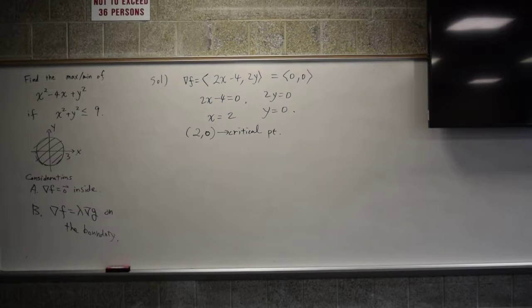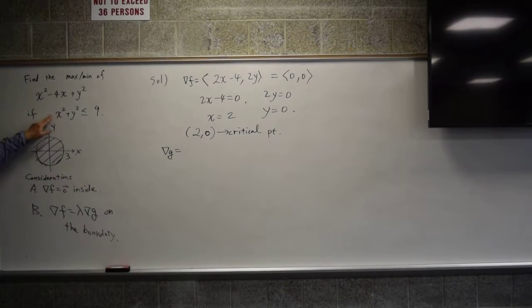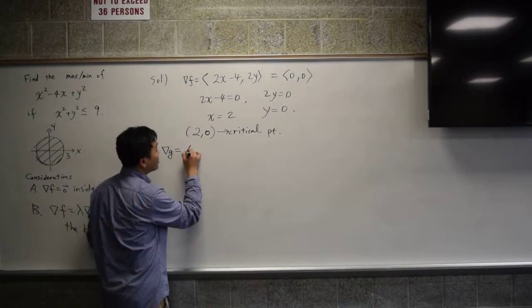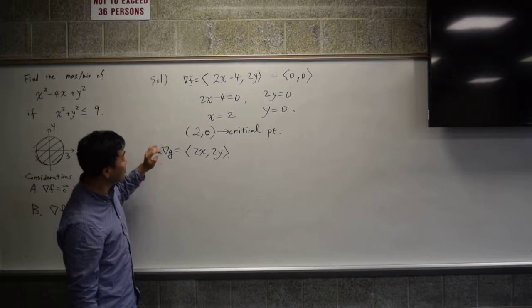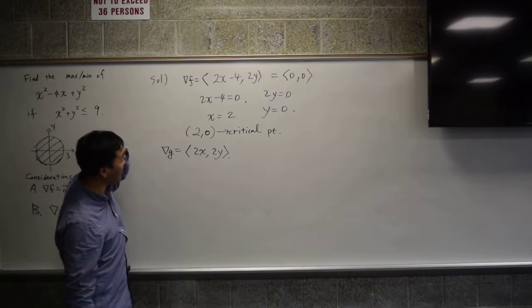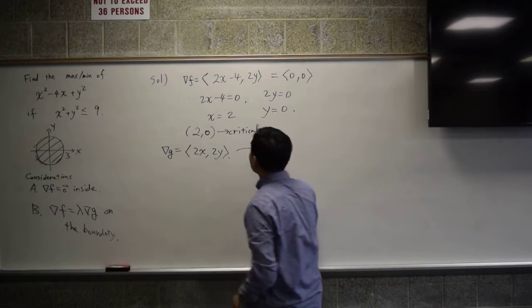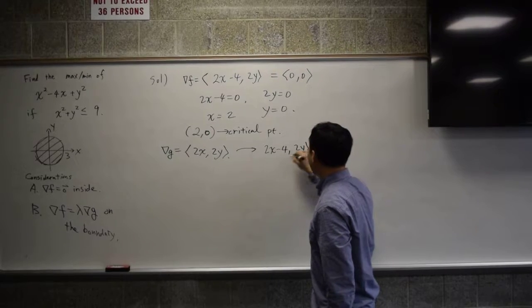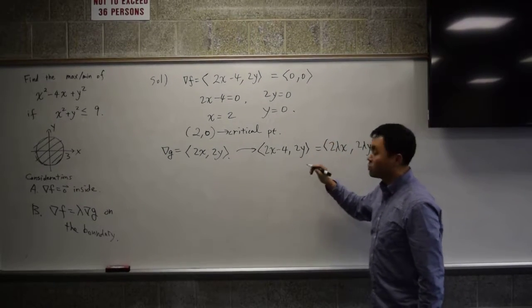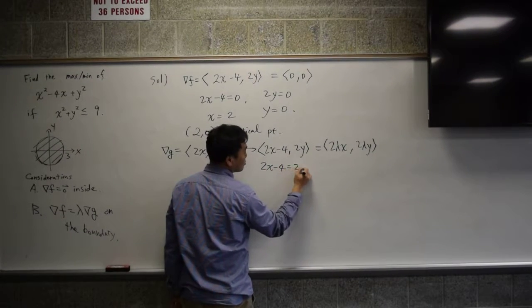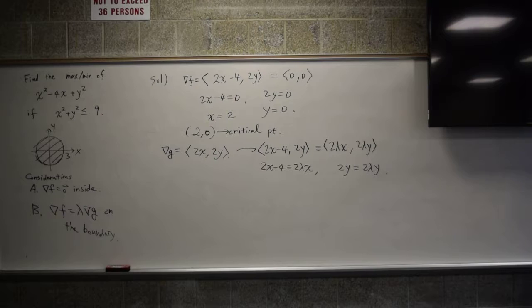Now let's go for the gradient. We have to find the gradient of g. So what's the gradient of g? 2x and 2y. And we have to say this is equal to lambda times the other. I guess it's easier to multiply here because it's simpler. So Lagrange multiplier says 2x minus 4 comma 2y is lambda times this, which is 2 lambda x and 2 lambda y, which says that 2x minus 4 is 2 lambda x and 2y is 2 lambda y.